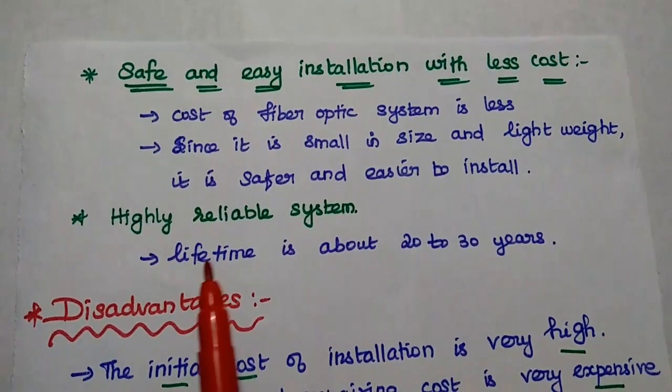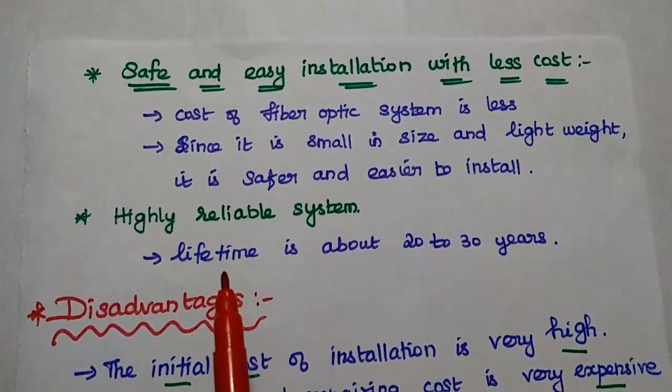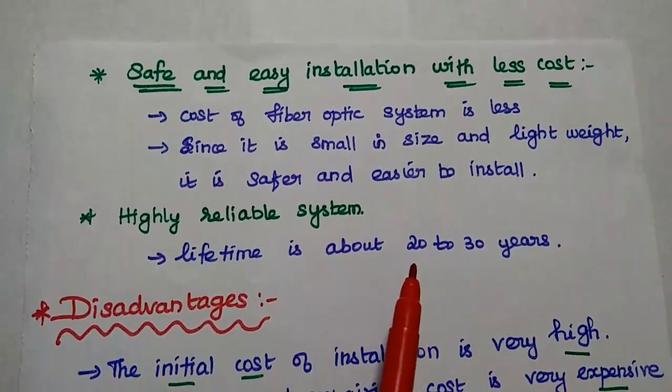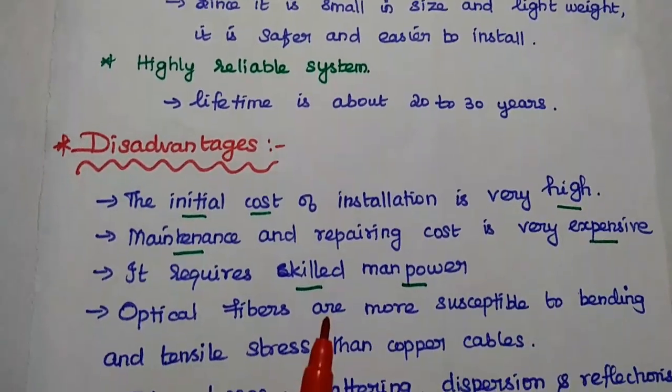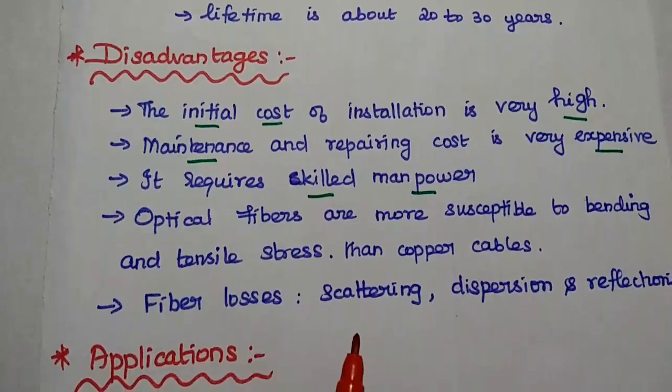And it is highly reliable system. That means the lifetime is about 20 to 30 years. These are the advantages of optical fiber system. Next, disadvantages.